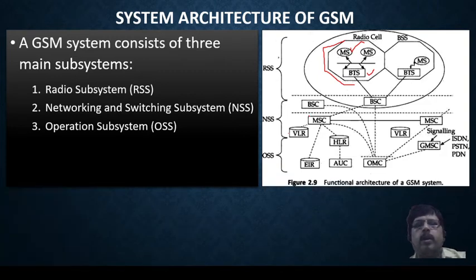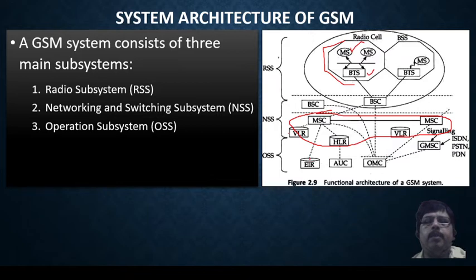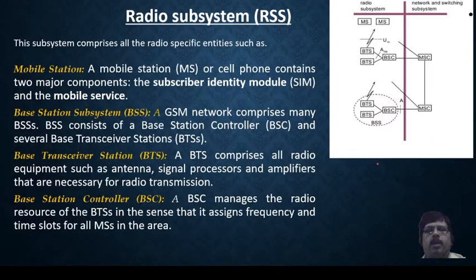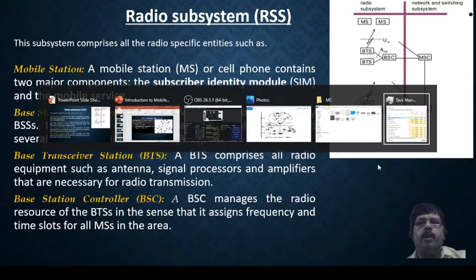The part with VLR and HLR is called the Network Switching Subsystem. The last one, which includes EIR and AUC, is called the Operation Subsystem. Now let us discuss each one by one.